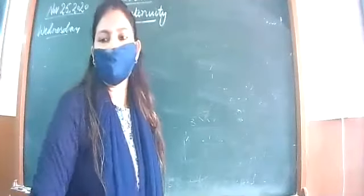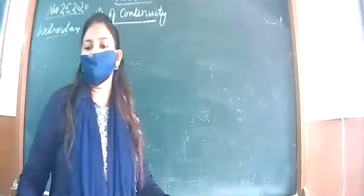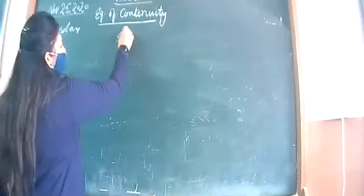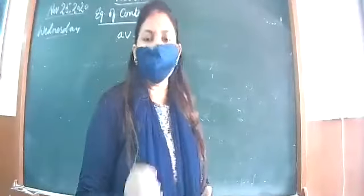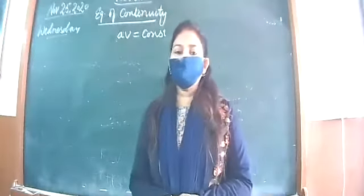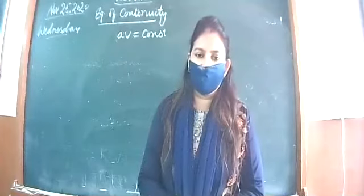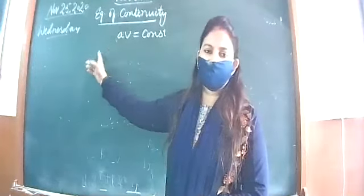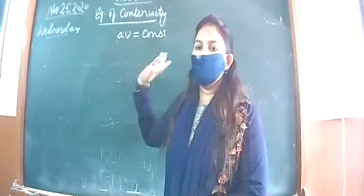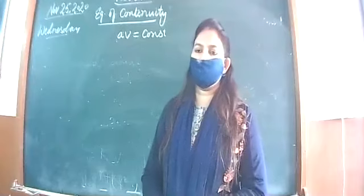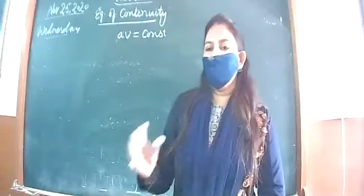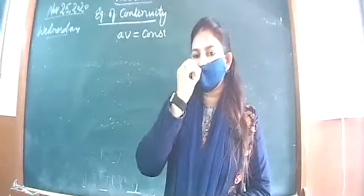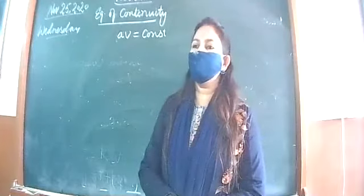For the streamlined flow of an ideal liquid, the product of area of cross section and velocity of liquid through a tube remains constant. Streamlined flow is an orderly flow of liquid in which every particle follows the path of preceding particles in the same direction with the same velocity — for example, when a tap is barely opened and water comes out drop by drop.